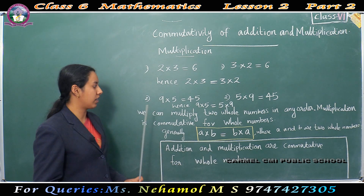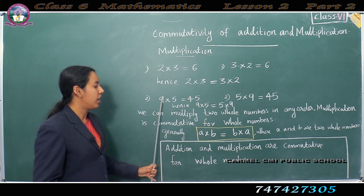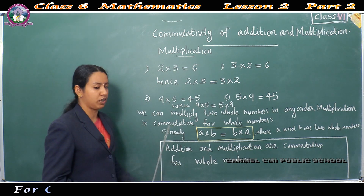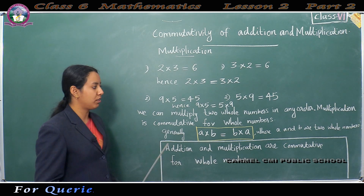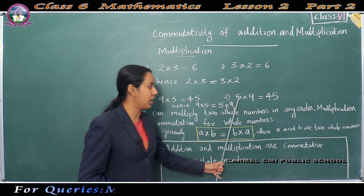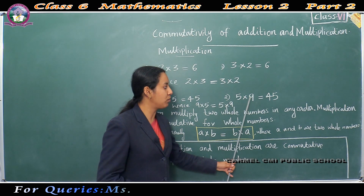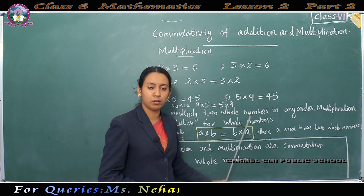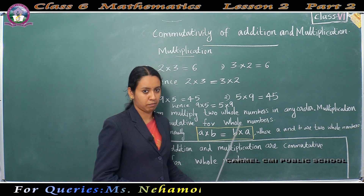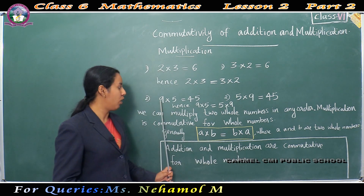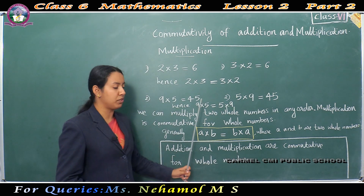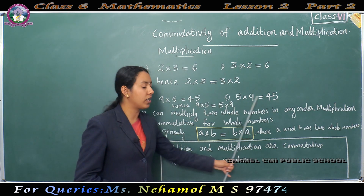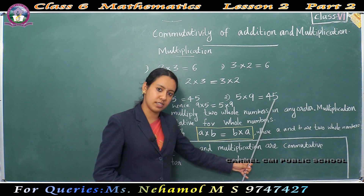Consider the second example. 9 into 5 is equal to 45 — 9 5's are 45. Then, 5 into 9 also equals 45. Here also, the order of numbers changed, but the product is the same.